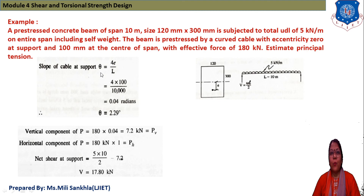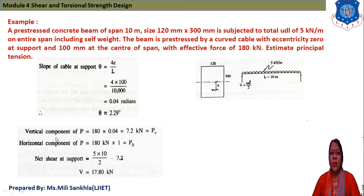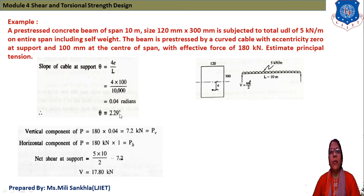Since the cable is curved, we find the slope at support: θ = 4e/L = (4 × 100) / 10,000 = 2.29°. The vertical component of the prestress force: P_V = 180 × sin(2.29°) = 7.2 kN. The horizontal component: P_H = 180 × cos(2.29°) ≈ 180 kN.